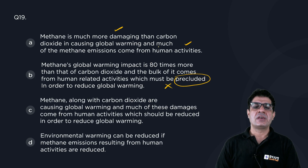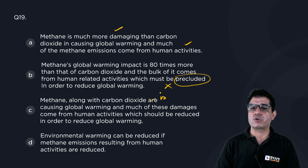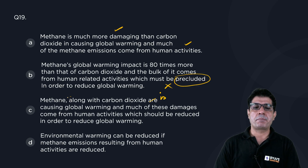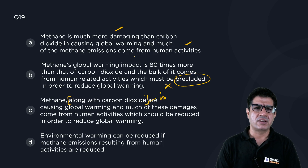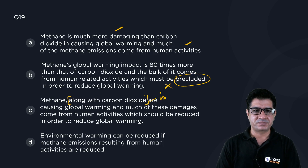Let's have a look at C. Methane along with carbon dioxide is causing global warming, and much of these damages come from human activities which should be reduced. The problem is the passage does not say methane along with carbon dioxide is causing global warming. Carbon dioxide is not the focus — methane is.